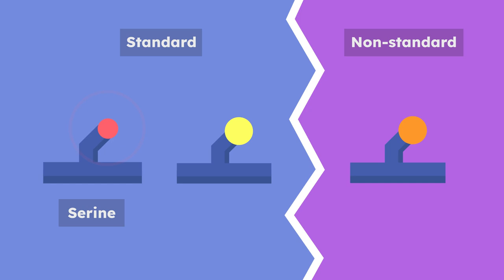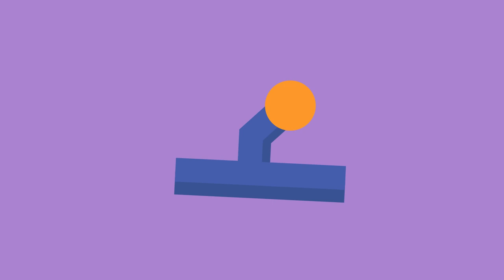But why is it not standard? Serine has an oxygen in that position, and serine is standard. What makes selenocysteine different? Well, to answer that question, we first have to take a look at translation.